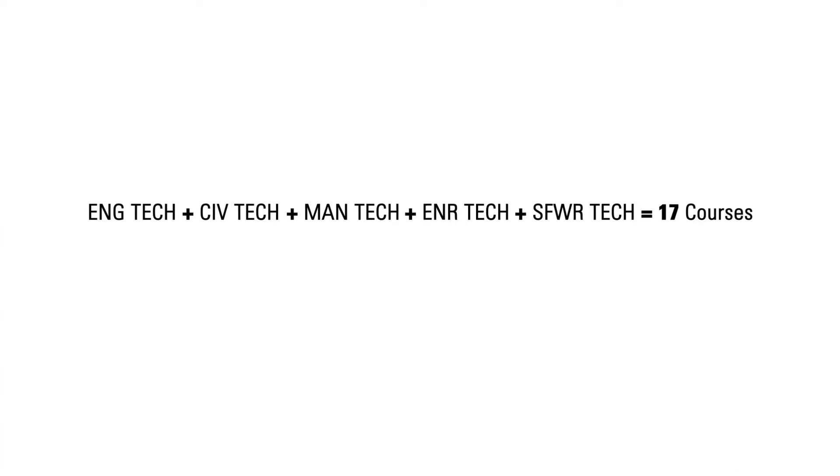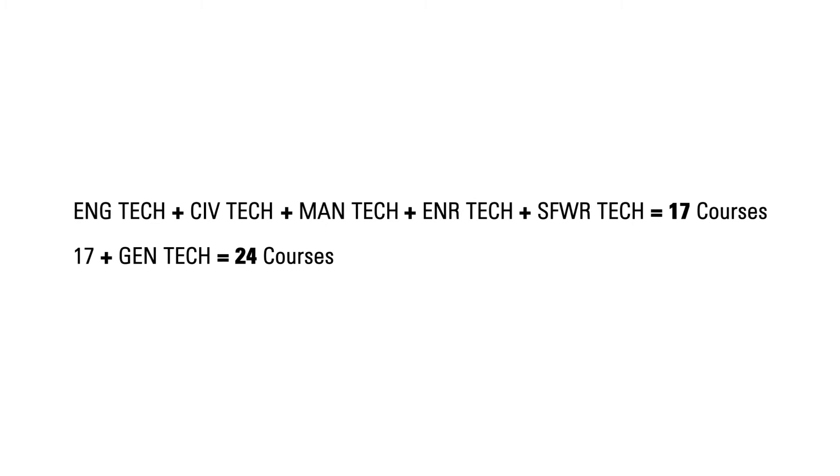I did also want to mention students will see these course codes. Some courses are EngTech, some are GenTech, some are ManTech and CivTech. The EngTech courses typically represent courses that are shared between different technical streams. So students who are in civil and manufacturing and energy may all share one math course. Math is a good example of an EngTech course, it's shared among different streams. If you're in manufacturing, for instance, there are courses that are just ManTech, and those are courses specific to your stream. That's true for the civil, the software, and the energy programs as well. But in total, between the EngTech and your course or stream specific courses, you need to get 17 technical courses, plus seven GenTech courses. That is true for all of our programs.